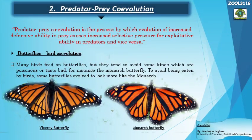The second kind of co-evolution is predator-prey co-evolution, which is somewhat similar to parasite-host co-evolution. The precise definition: predator-prey co-evolution is the process by which evolution of increased defensive ability in prey causes increased selective pressure for exploitative ability — or predating ability — in predators, and vice versa.